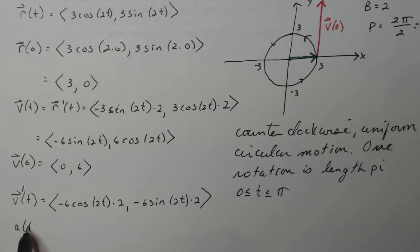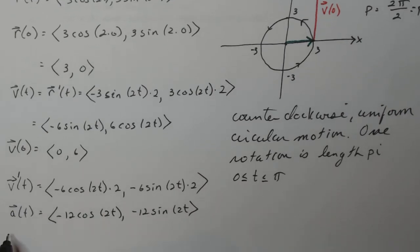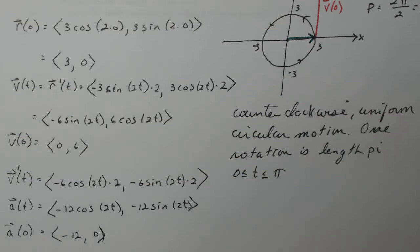So acceleration at any time t should be minus 12 cosine two t minus 12 sine two t. And I have to plug in t equals zero for the problem. So I know the cosine of zero is one, so it should be minus 12. The sine of zero is zero, so that should be zero. So acceleration on that particle right at that point should be <-12, 0>.